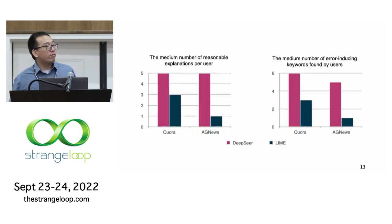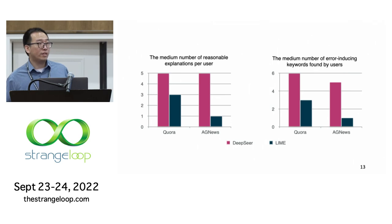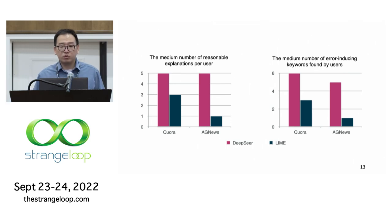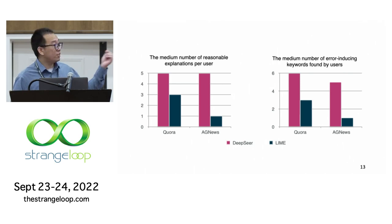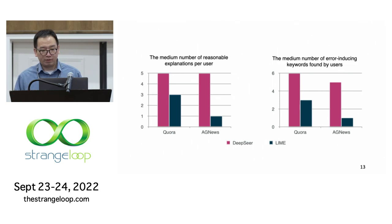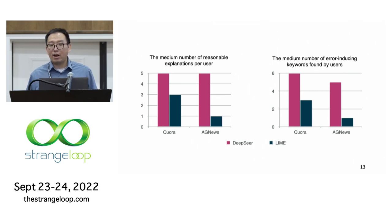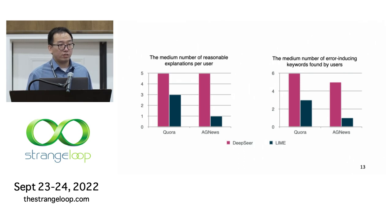To further confirm the usefulness of this idea, we did a user study with 28 CS students and asked them to debug two different models trained on two different datasets using DeepSeer versus another popular deep learning debugging tool called Lime. We found that students using DeepSeer provided more reasonable insights about the root causes and found more error-inducing keywords in the input sentence compared with Lime.